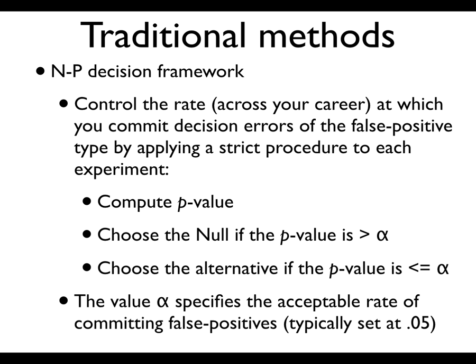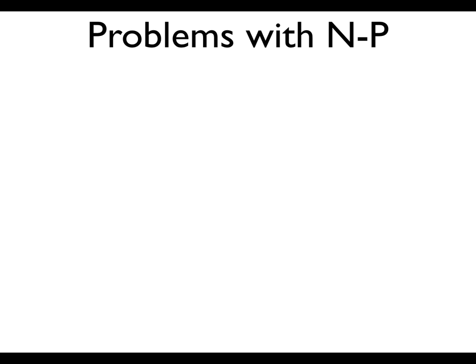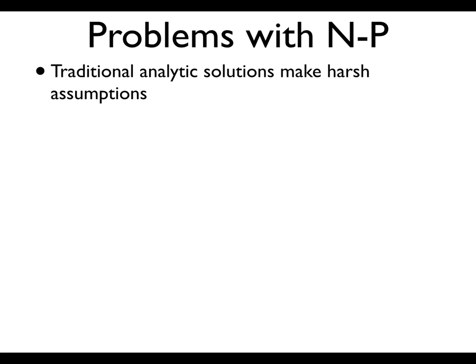The value you choose at the outset specifies the acceptable rate of committing false positives. Traditionally we put it at 0.05. Other fields have different standards — physics uses 0.0001 because they can collect tons of data. There are problems with the Fisherian perspective of p as proportional to evidence, and problems with the Neyman-Pearson perspective — partly philosophical, partly due to how we compute the p-value in the first place.